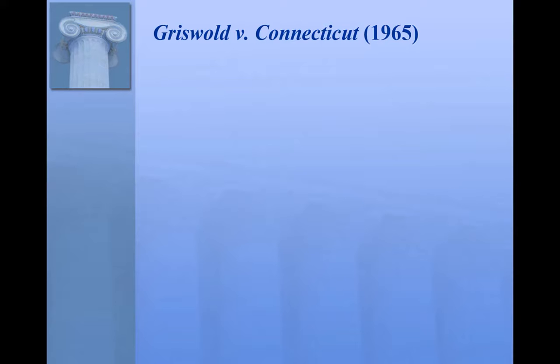Griswold is very different from the other cases we've looked at. Those cases involved economic rights, education, and criminal rights. Griswold involves the right to procreate. In particular, it involves a statute in Connecticut that made it illegal to distribute condoms and other contraceptives to married couples. Estelle Griswold called up the police and said: please come down to the clinic I've established — I'm distributing contraceptives to married couples in violation of your law. This was a test case; she wanted to be arrested so that the Supreme Court could consider whether marital privacy and procreative privacy is part of the meaning of due process in the 14th.